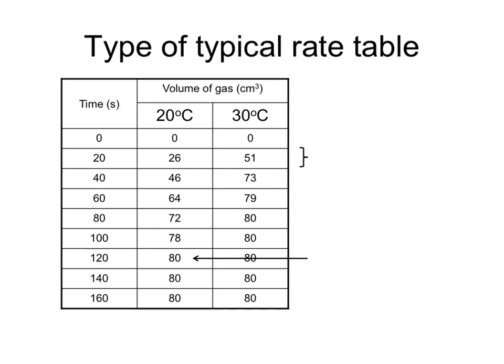Sometimes you might have to interpret data in a table. Here, for example, if we look at the 22nd time, you can see that over the first 20 seconds, at 20 degrees, we've got 26 cubic centimeters of gas, whereas at 30 degrees, we've got 51. So quite clearly, comparing two bits of data from the table tells us that the reaction at 30 degrees is faster.